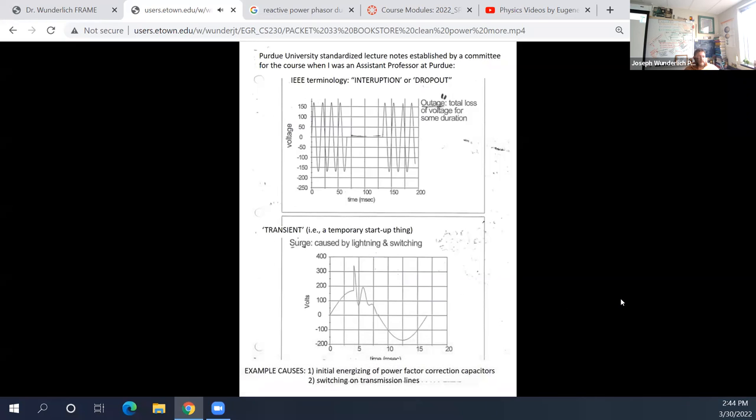Now, the next thing, maybe not quite as common to understand, is a transient, so a temporary startup of something, a surge. So you see voltage over time here. And some causes, so initial energizing of power fraction correction capacity. Now that, to fully understand, takes some more lectures and other courses.